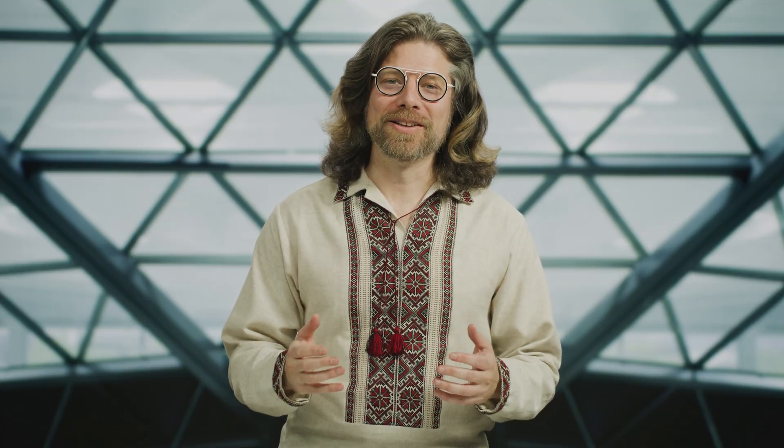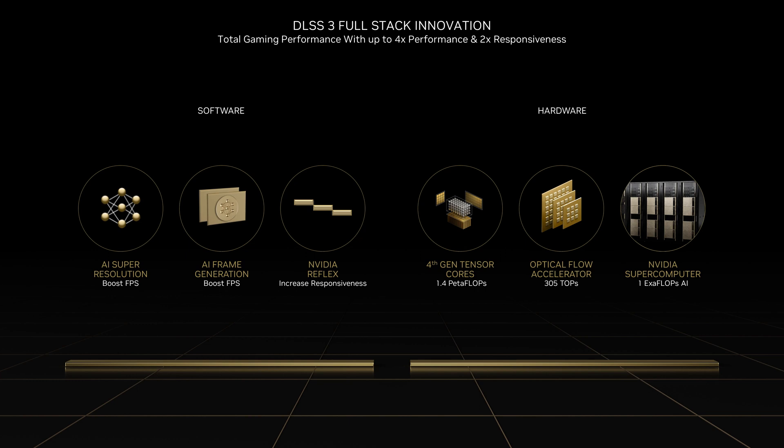DLSS 3 is also powered by three hardware components. First, our fourth generation Tensor Cores provide up to 1.4 petaflops of AI, which is necessary in order to run multiple neural networks simultaneously to generate frames and do super resolution in DLSS 3. The second component is the Optical Flow Accelerator, which provides more than twice the throughput of older generations while also increasing quality. This is essential for the frame generation task.